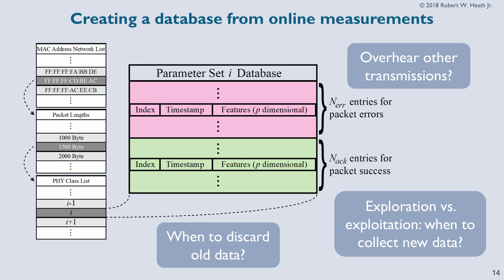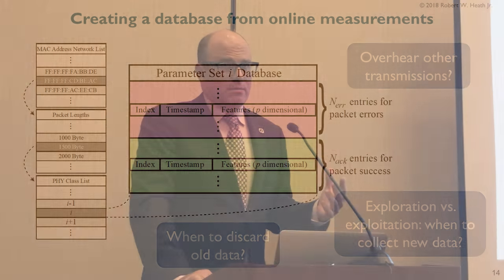Also, in a wireless system you have broadcast transmission, so you can collect information from other people's transmissions. If the access point is sending to a laptop with a certain coding modulation, you can overhear that and process it as well. It's a bit more tricky when you have pre-coding at the transmitter, because that pre-coding was designed for the other user's channel. But if you have spatial multiplexing without pre-coding, you could overhear it and add that data into your database.